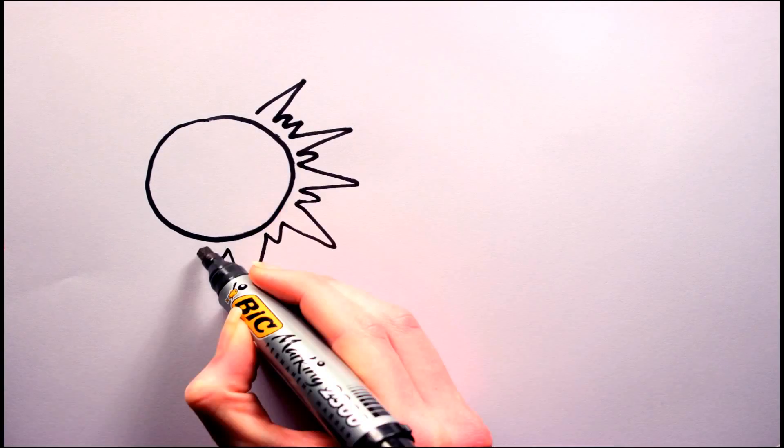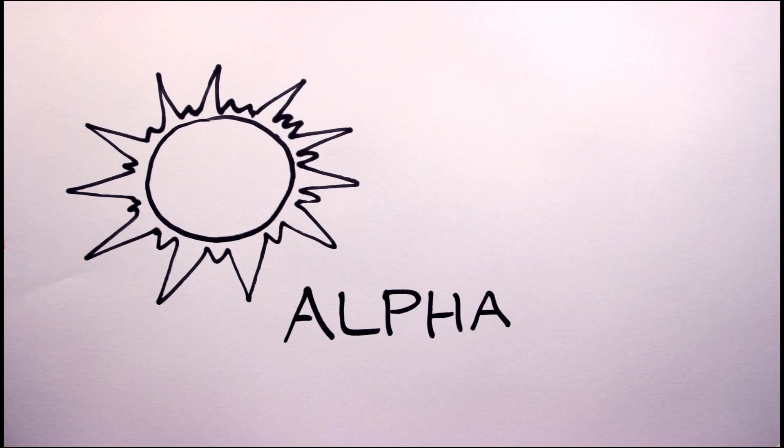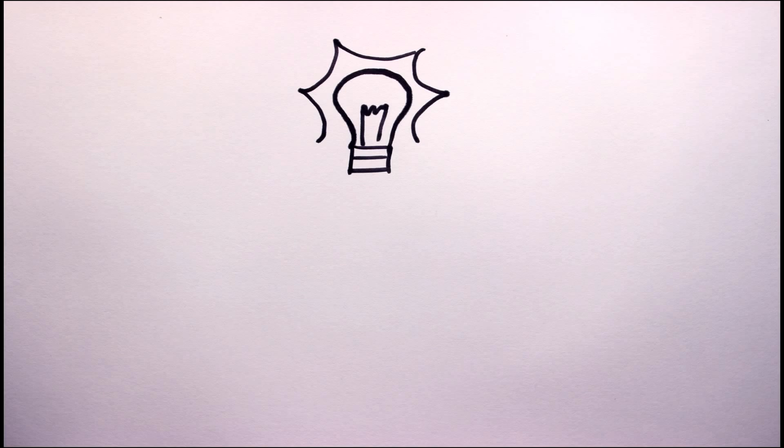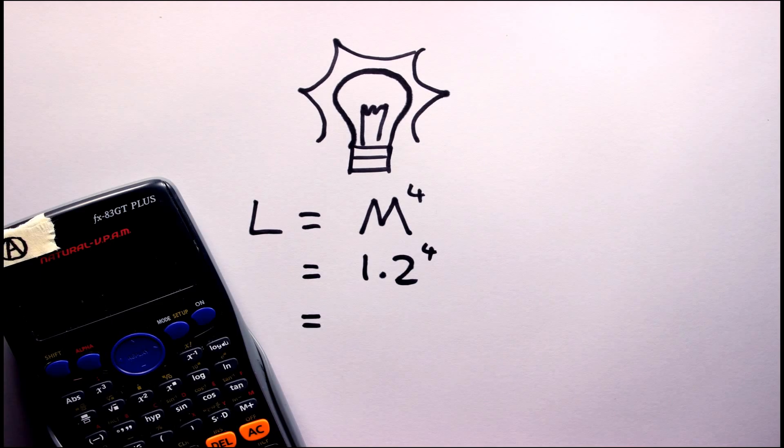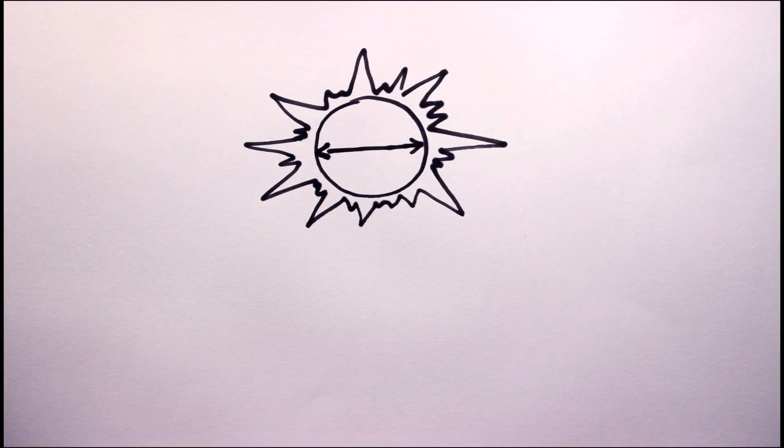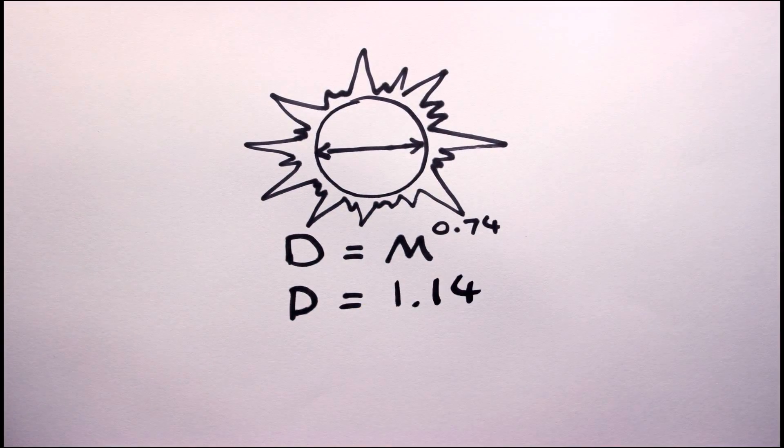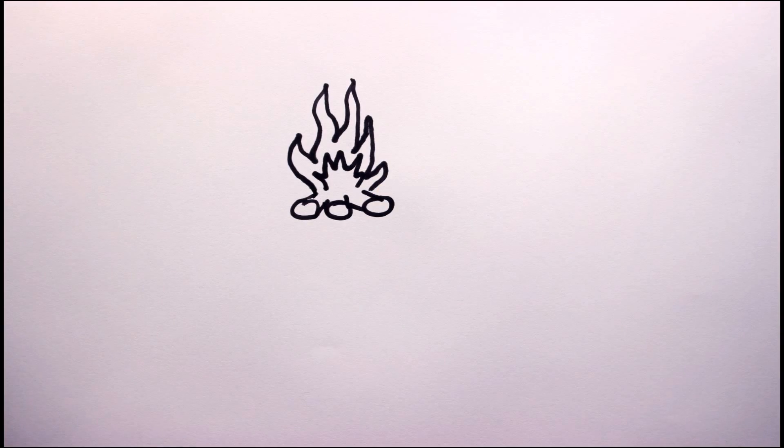Okay, so the first step is to pick a mass from the Goldilocks mass range. Let's call our new star Alpha, and let's say it has a mass of 1.2. From this mass, we can determine Alpha's luminosity or brightness. Alpha's diameter is given by the following. Its surface temperature will be given by this.